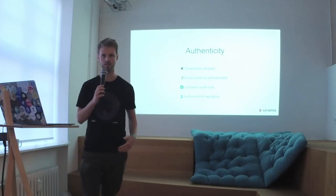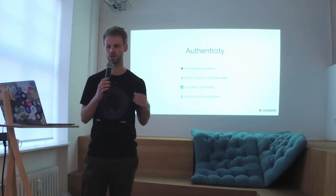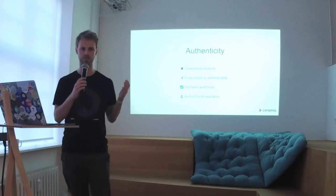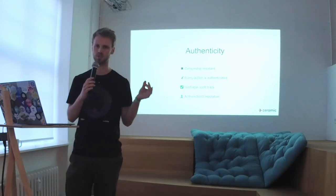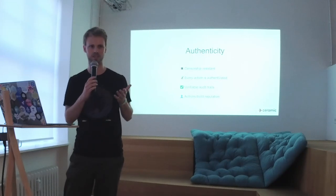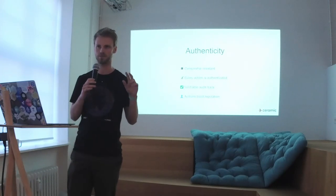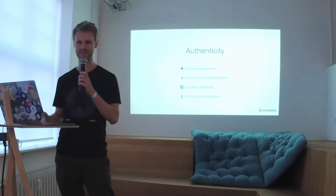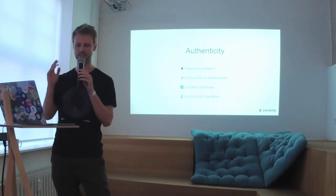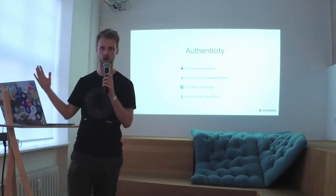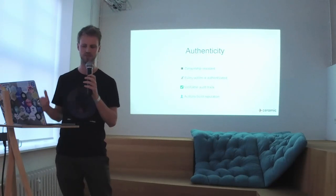Finally, we need authenticity. The system needs to be censorship resistant — we don't want arbitrary actors to be able to remove stuff. We want every action to be authenticated, which essentially means accounts will sign data. An important piece to realize is that this system is autonomous — it doesn't require any real-world identity information. And we also want secure timestamping so we have verified audit trails of what happened at what point in time. With this, authors of data can build reputation.